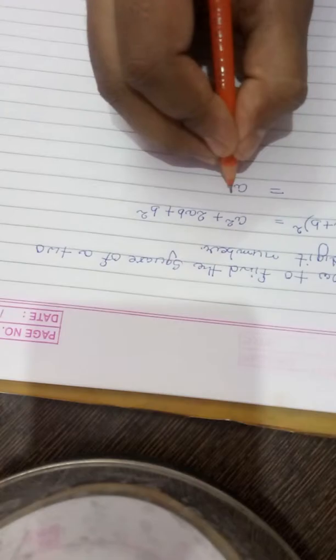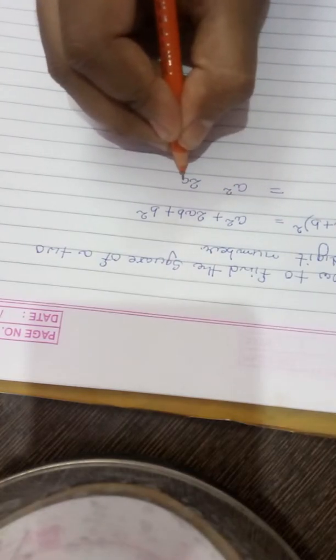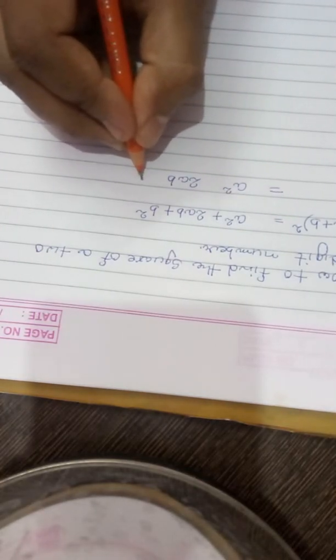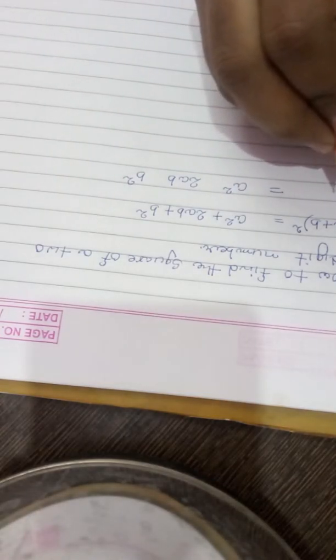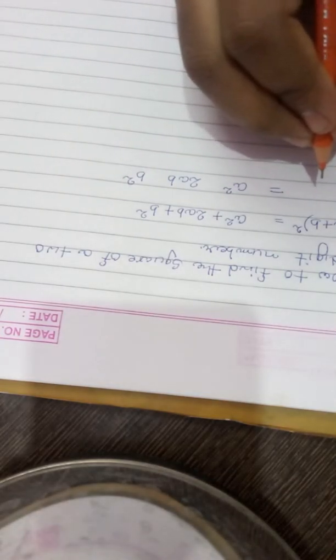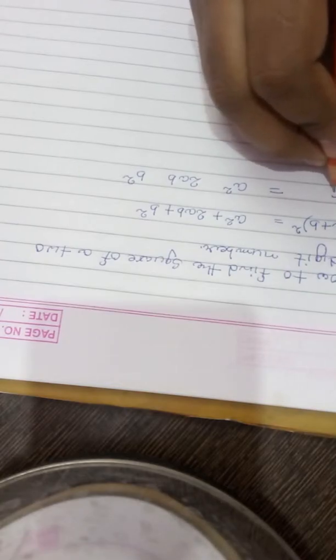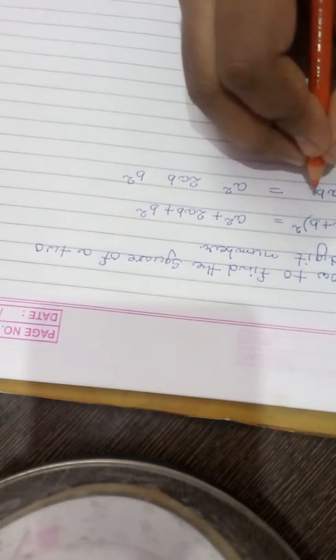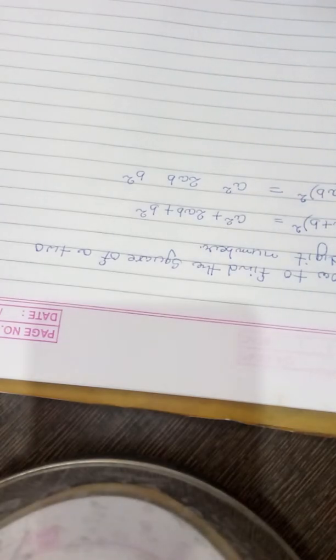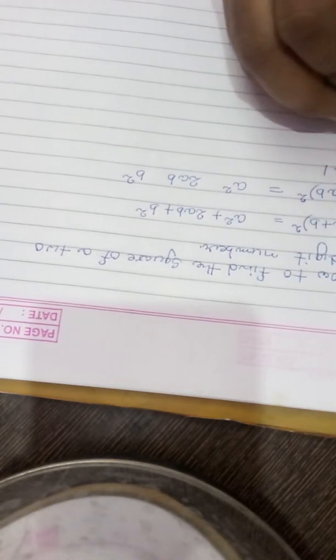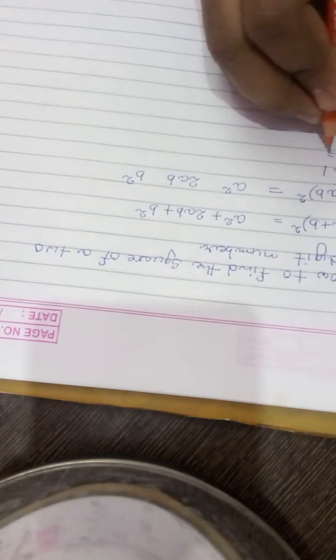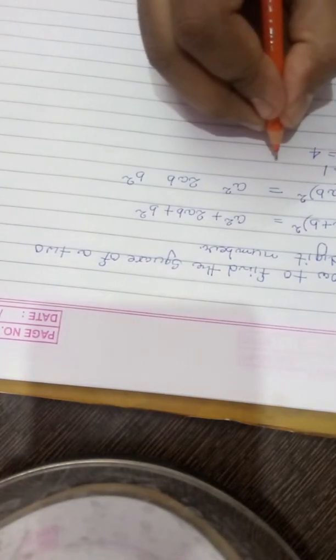a² + 2ab + b², and this square is nothing but a product of two numbers. That means (a + b)². Okay, suppose I am taking a as 1 and b as 4.